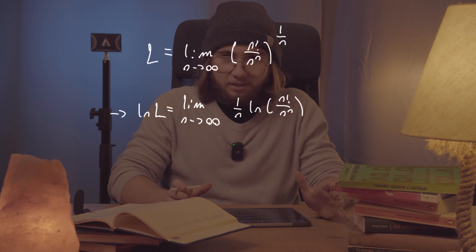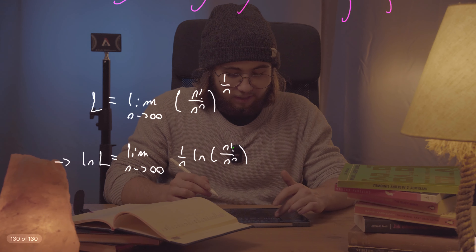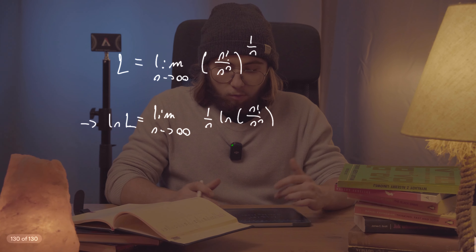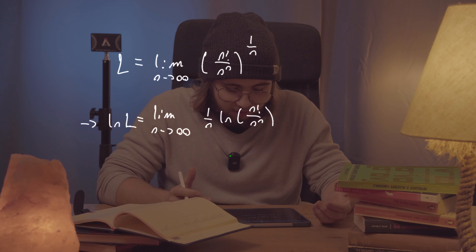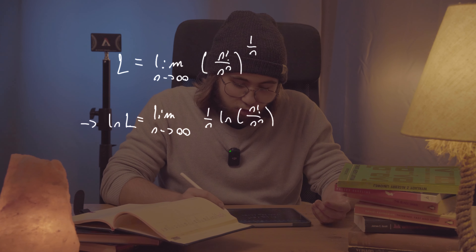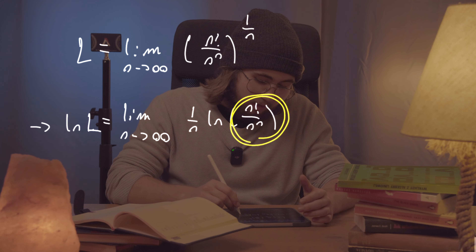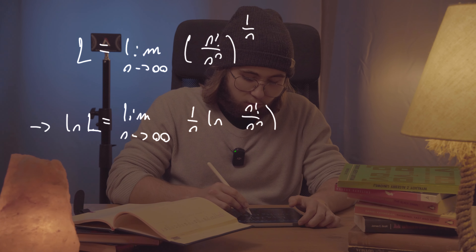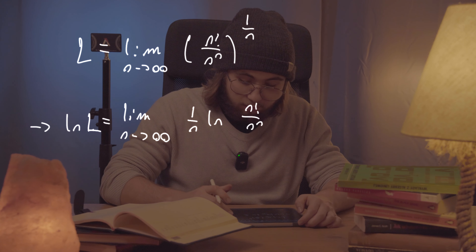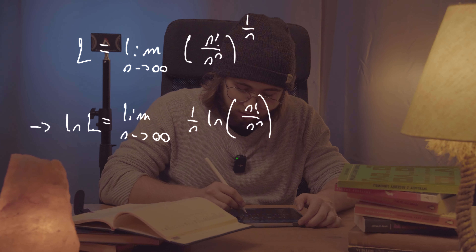Now I'd like to do something with this limit to make it easier to evaluate. Let's see what the natural log of n factorial over n to the power of n is actually equal to — can we manipulate it somehow?